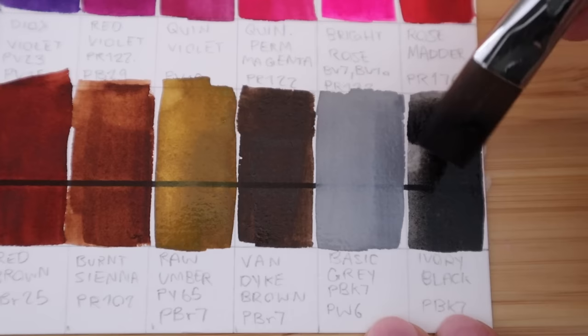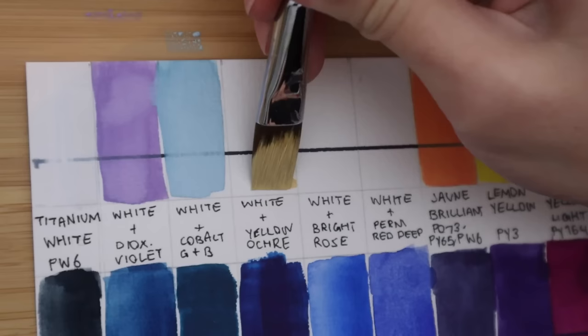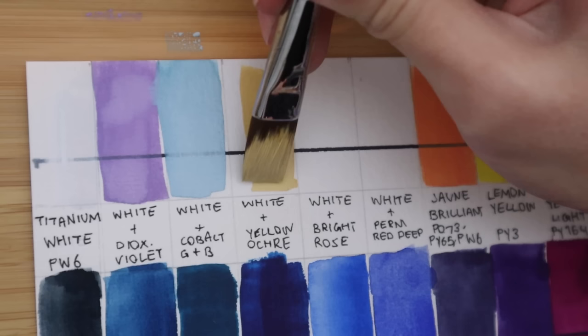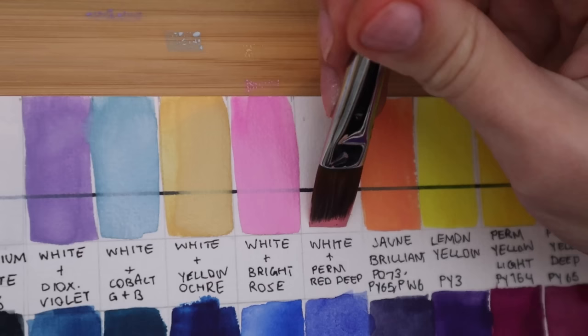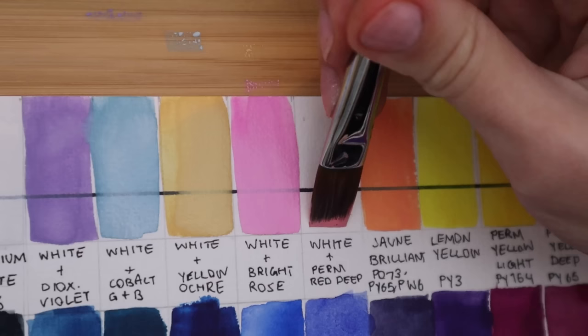And then for those five color mixes with white, I ended up going with a white and dioxazine violet, a white and cobalt green plus a little bit of cobalt blue. And then I did a white plus yellow ochre to get sort of a naples yellow. I did white and bright rose and white and permanent red deep. So I can always change these in the future, but I did find myself using them a lot later on.